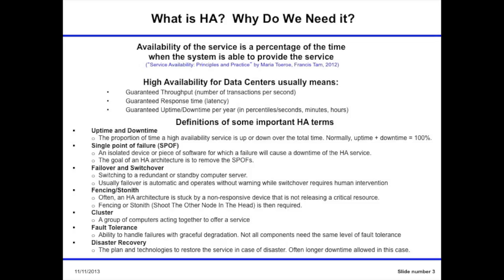My first slide is related to high availability. According to one book, availability of the service is a percentage of the time when the system is able to provide that service. When we're talking about high availability, we mean something close to 100% of the time where the service is available. For data centers, high availability usually means guaranteed throughput — number of transactions per second — set by a service level agreement, and also guaranteed response time, which means latency, plus uptime and downtime per year measured in percentiles or seconds, minutes, and hours.